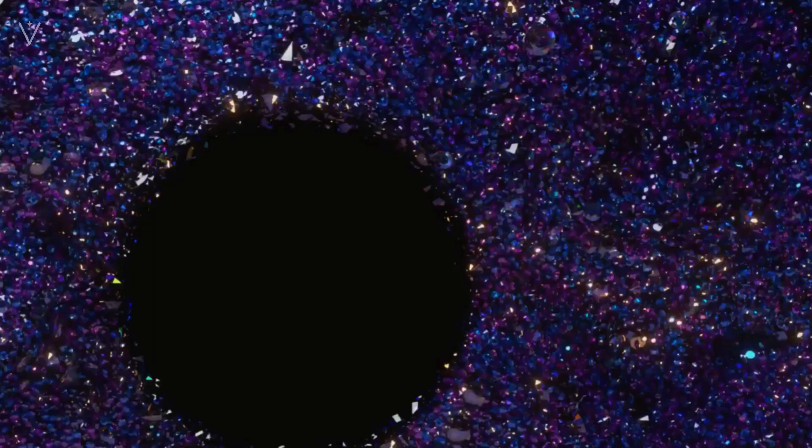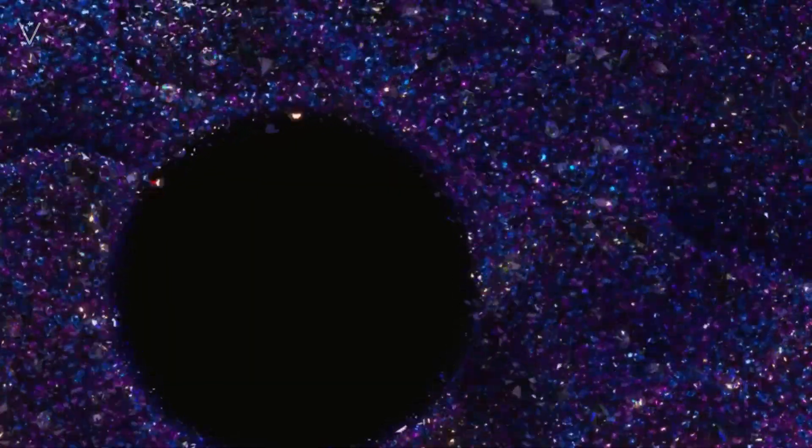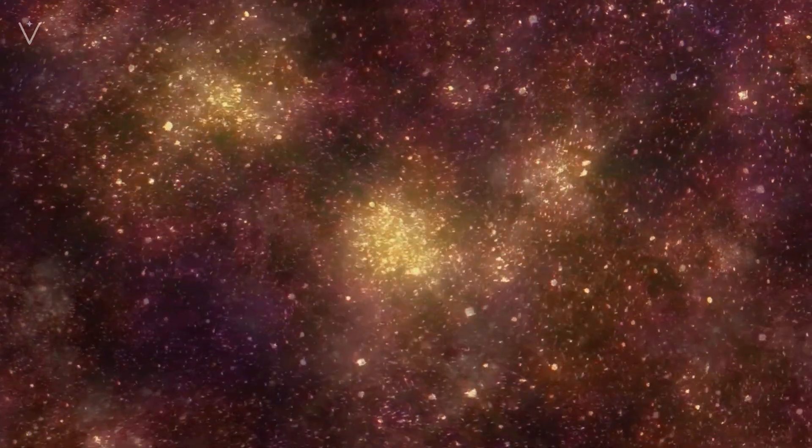Imagine baking a loaf of raisin bread. As the bread bakes, it expands and the raisins move farther apart. That's like the expansion of the universe. Now imagine the raisins moving apart faster and faster. That's what dark energy is doing to the universe.